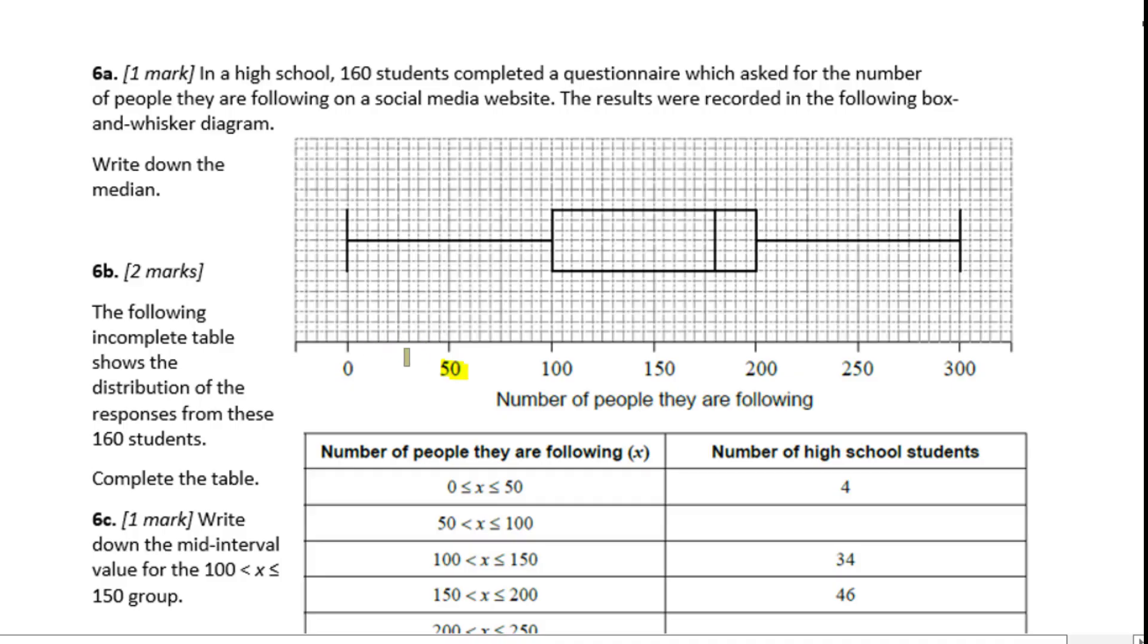So each one stands for 5. Here this is the median. That will be 1, 2, 3, 4, which is 200 minus 20. So it's 180. The following incomplete table shows the distribution of the responses from these 160 students. Complete the table.